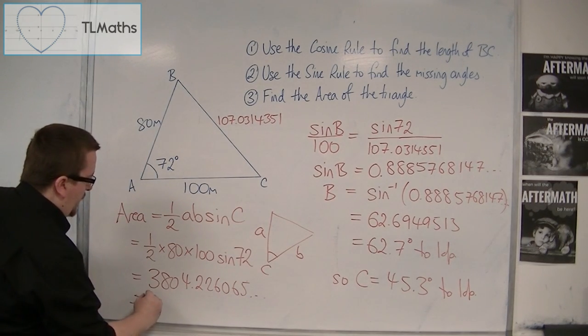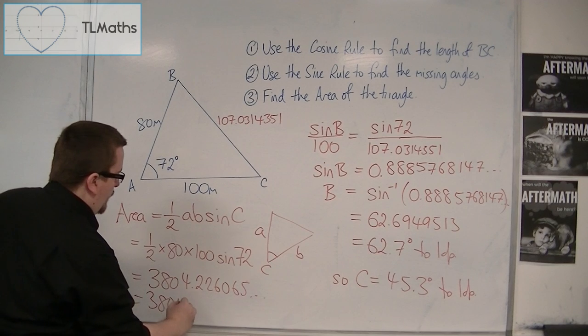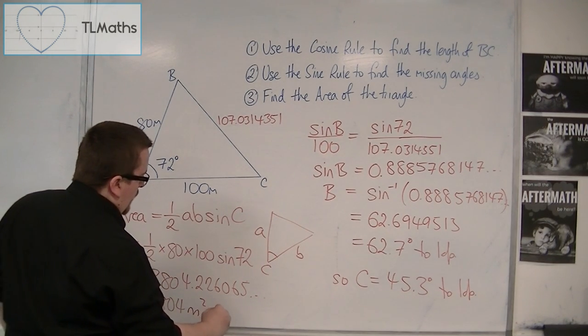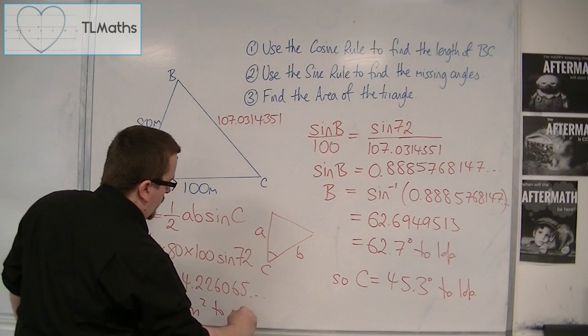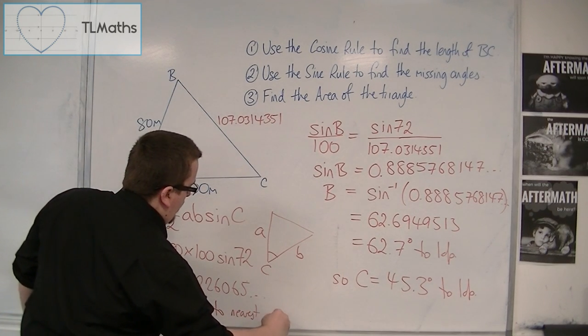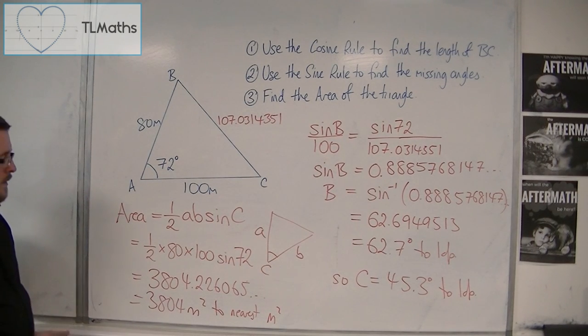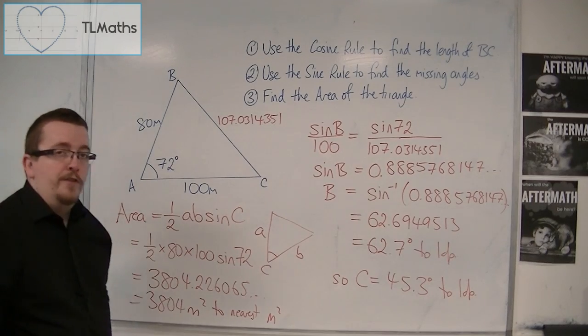So, that's 3804 square metres to the nearest square metre. OK? So, that would be the way to find the area of a triangle.